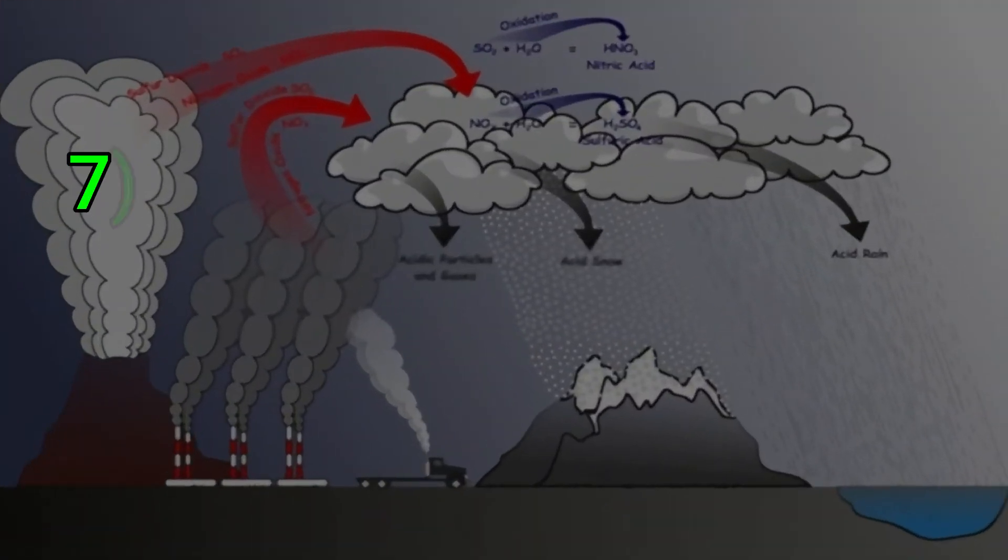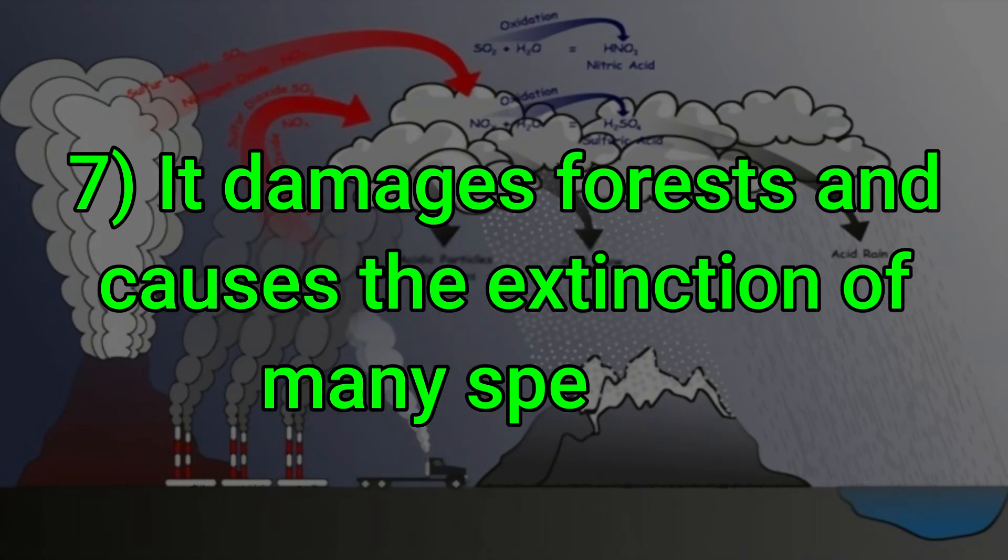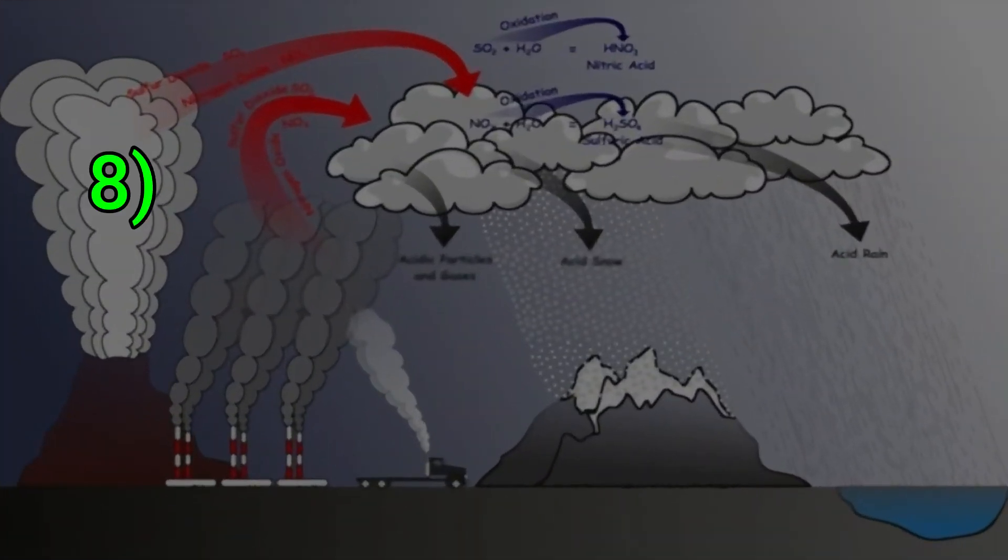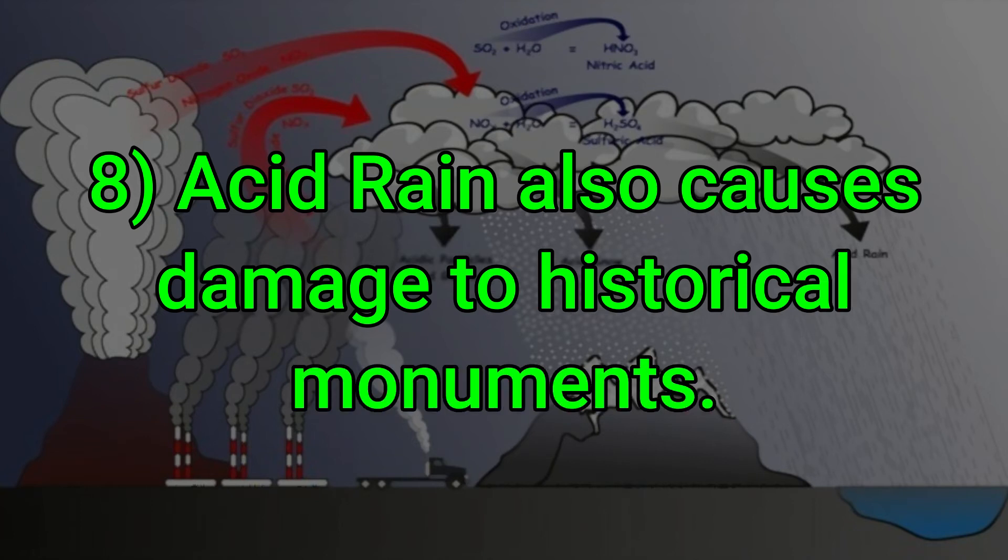It damages forests and causes the extinction of many species. Acid rain also causes damage to historical monuments.